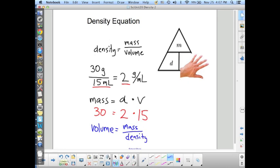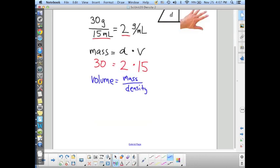The mass in this case is 30 grams and the density is 2 grams per milliliter. So 30 divided by 2 is 15, which checks out. That's 15 milliliters.